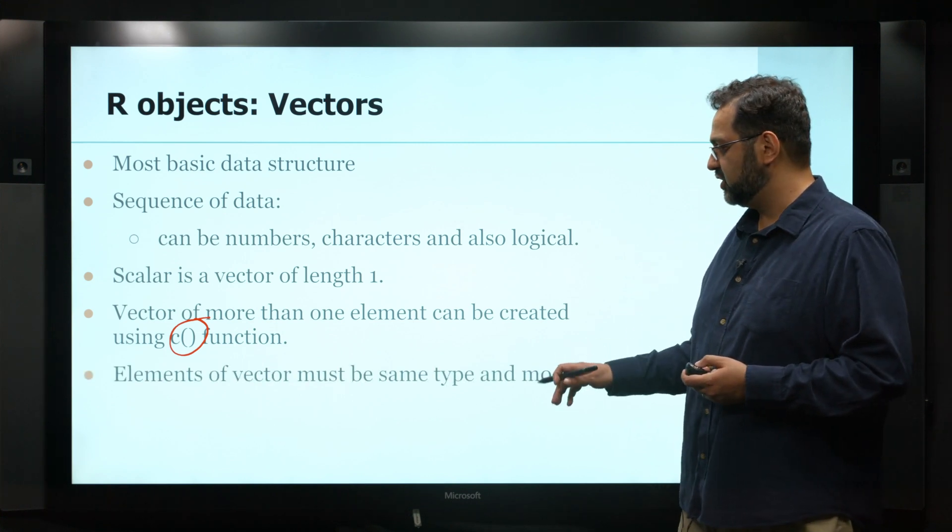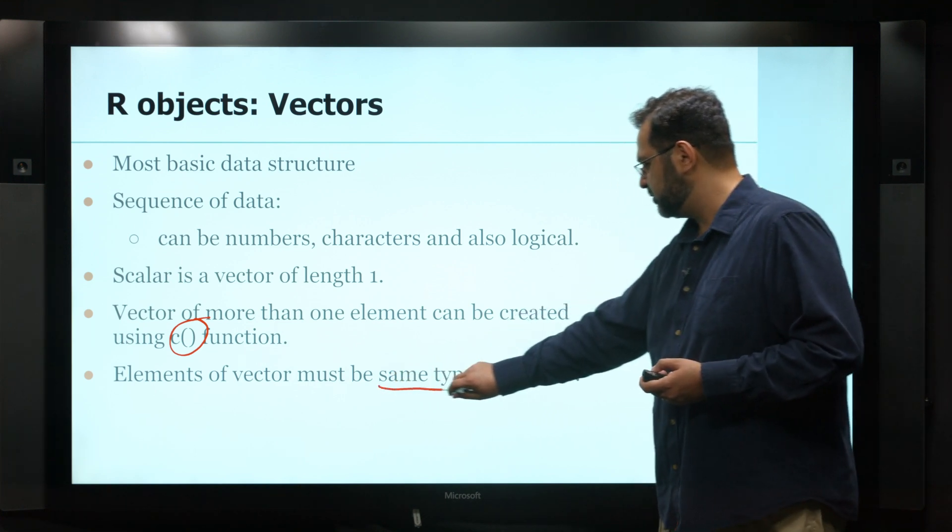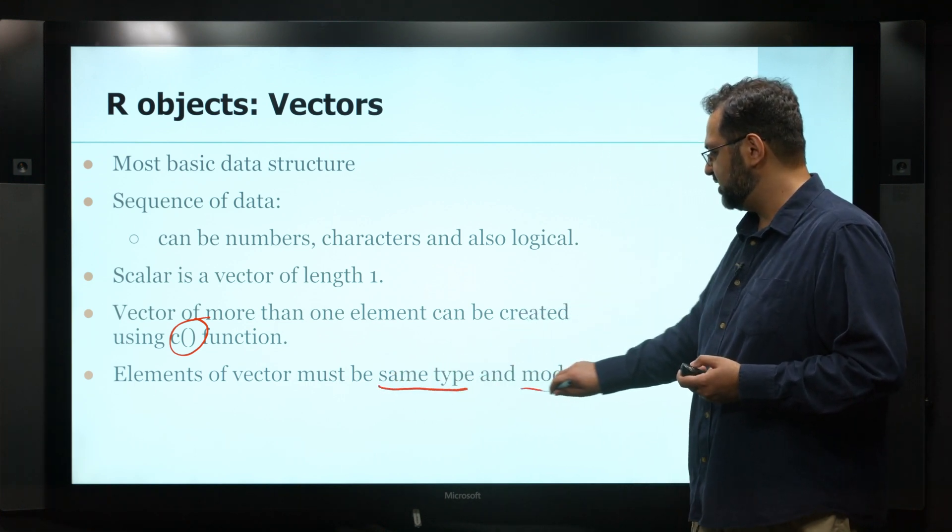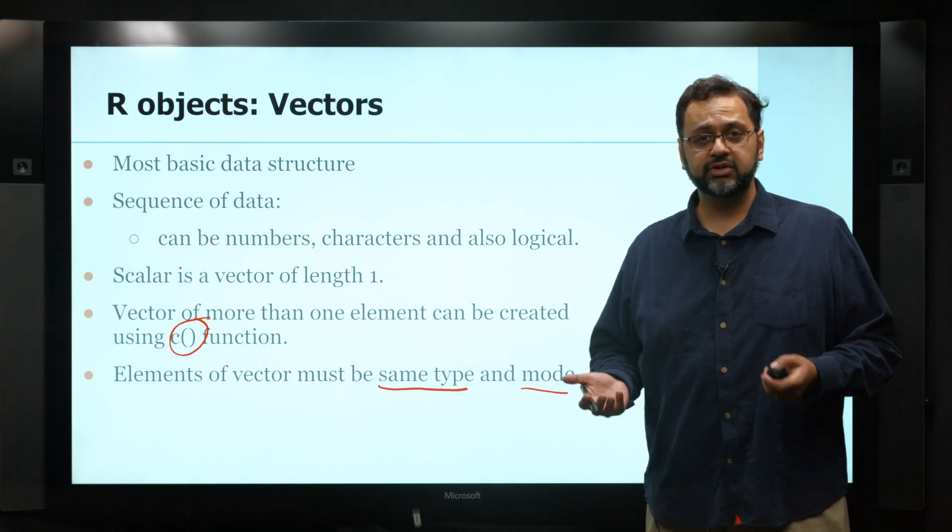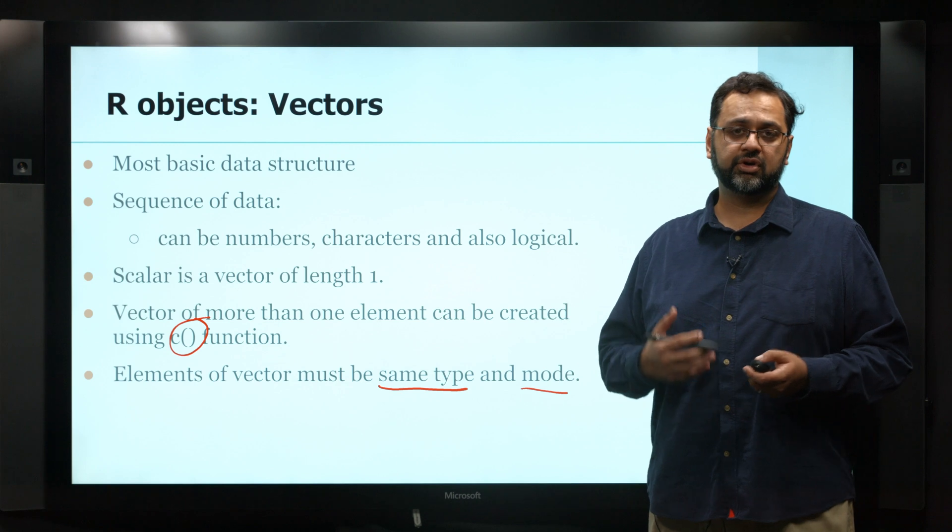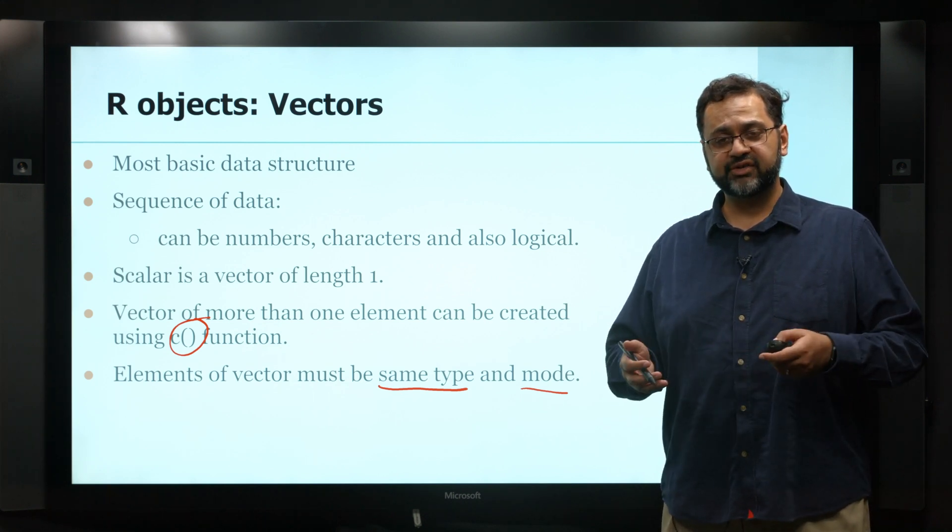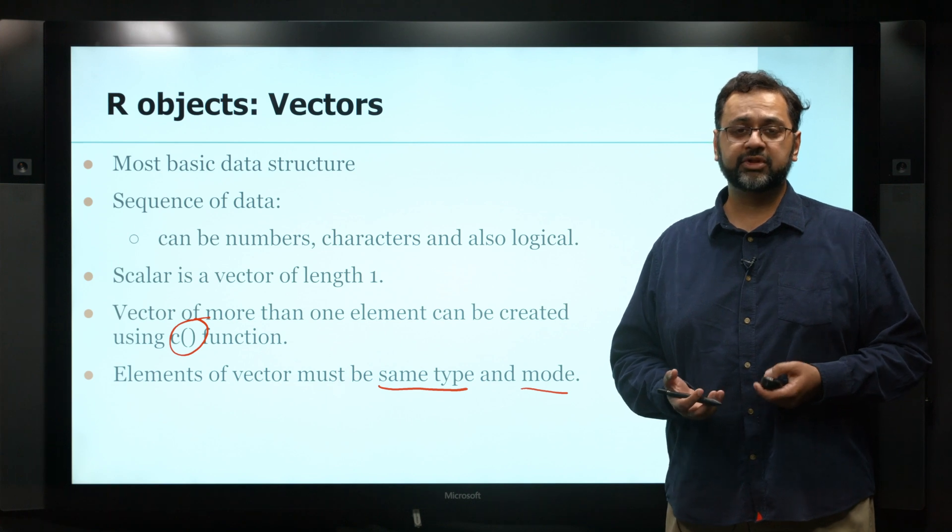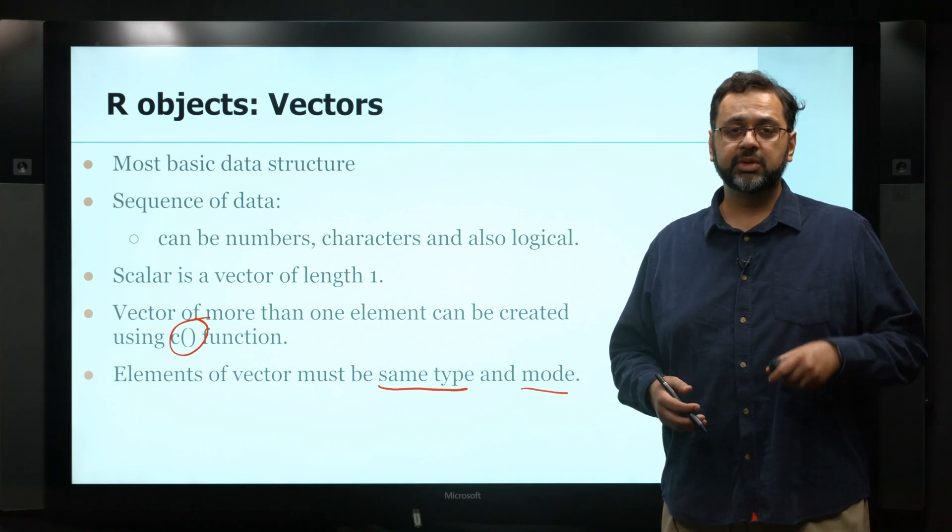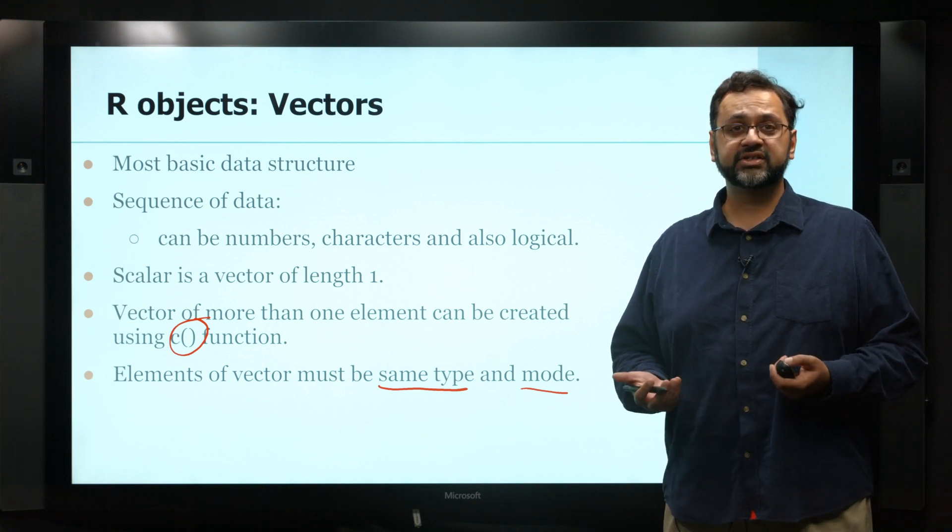The rules are that the elements of the vector must be of the same type and mode. That means they all have to be numerical, or all characters, or all logical. If you mix them up, it will take the more generic term. For example, if you mix numbers with characters, it will convert the numbers into characters because it's easier to do that. Otherwise, it will simply complain.